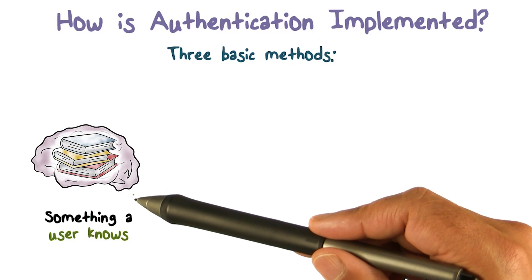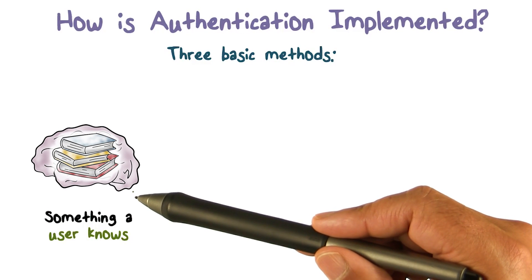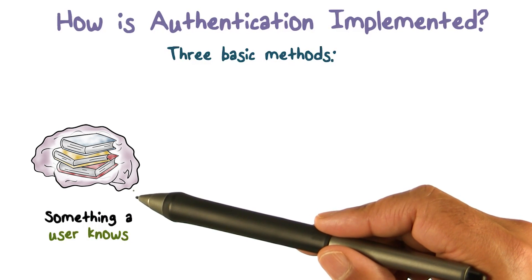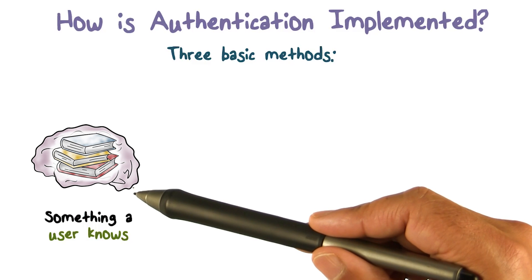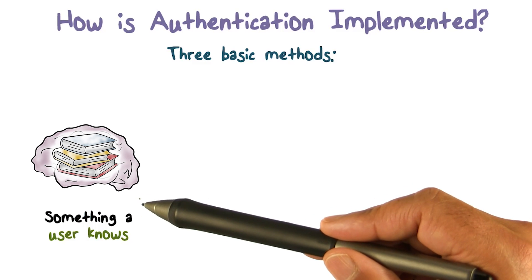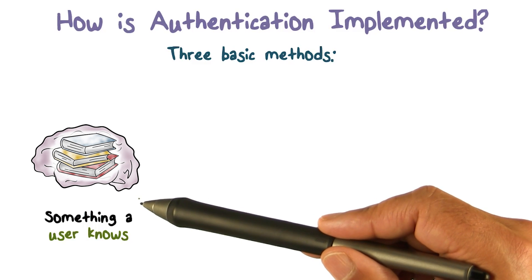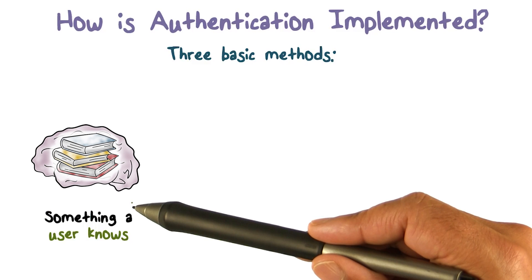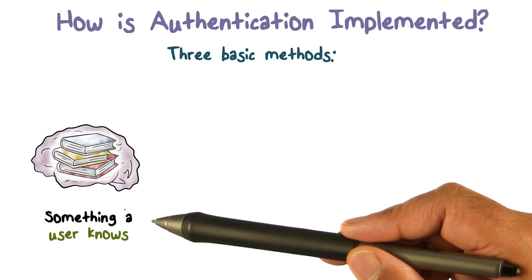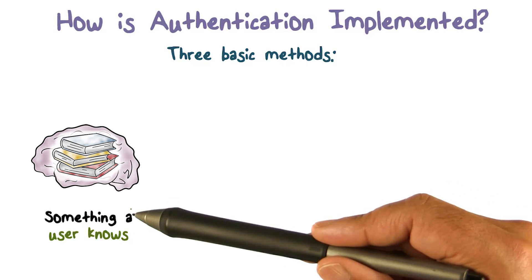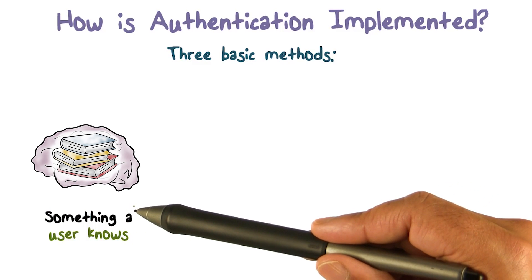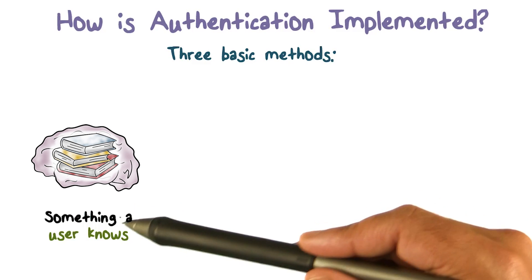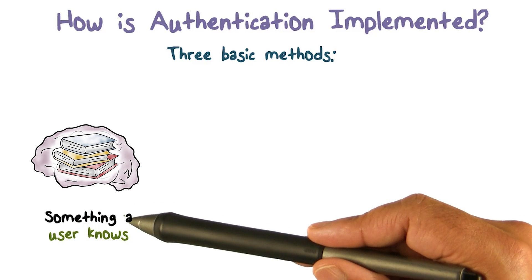Now let's talk about how authentication can be implemented. It could be something that the user knows — a secret that is shared between the user and the system. The fact that you're able to produce that secret associated with the user means you are that person. That is the evidence that you are who you claim to be.